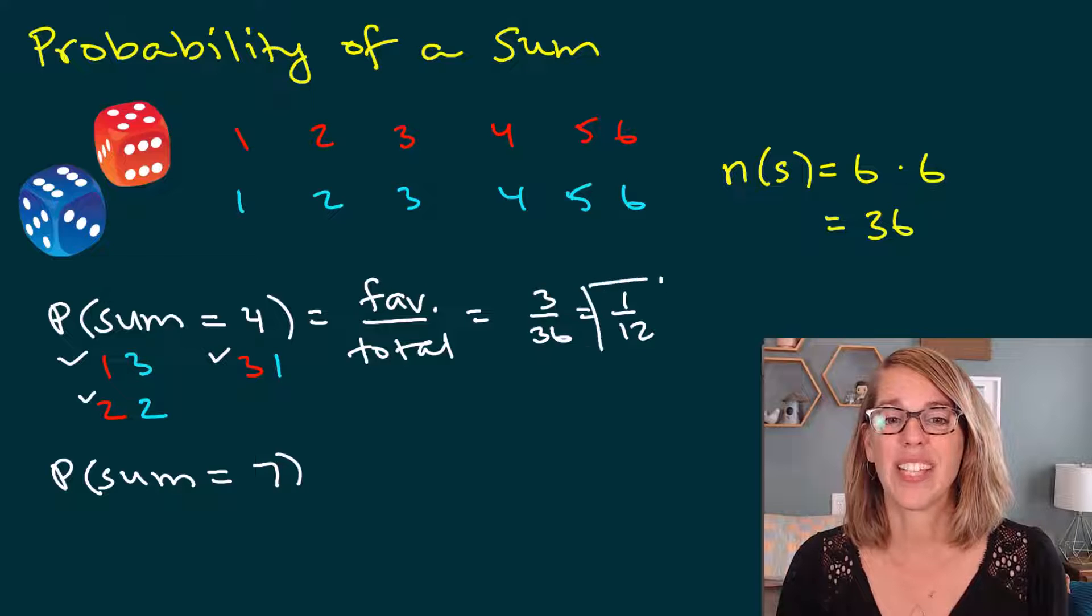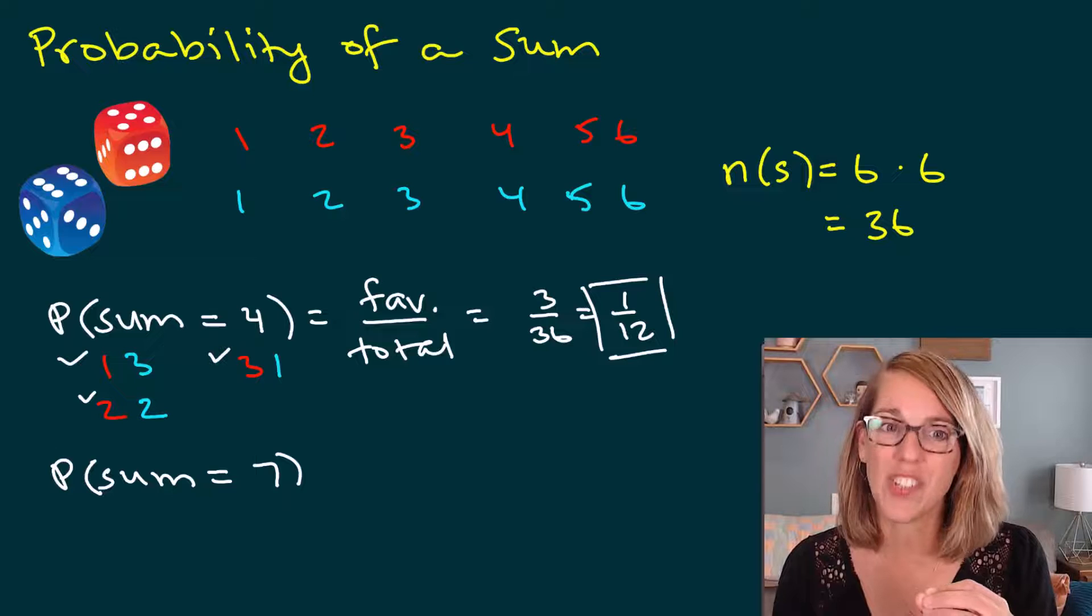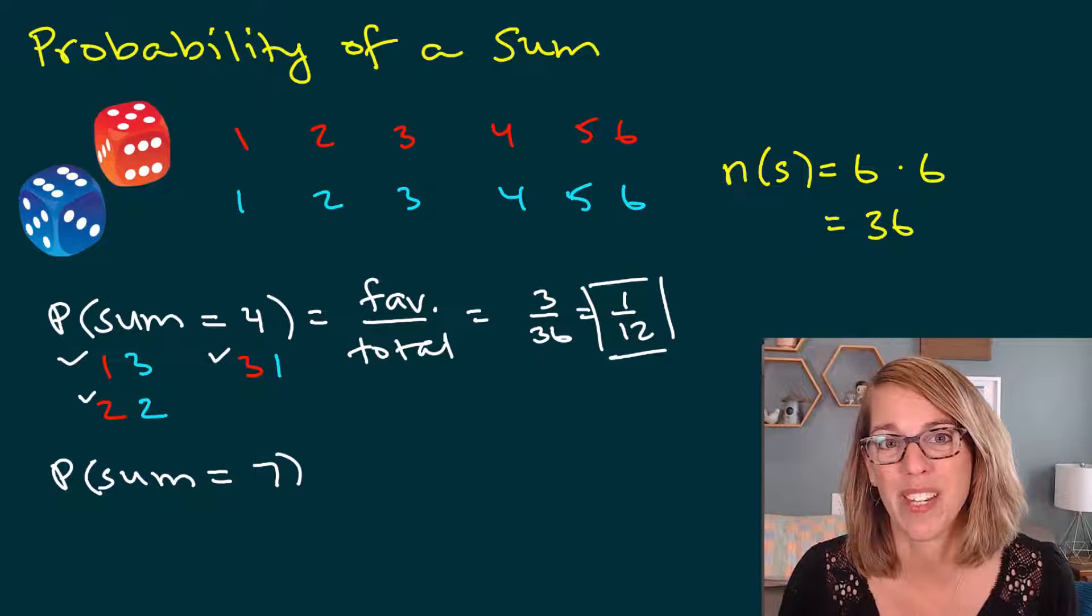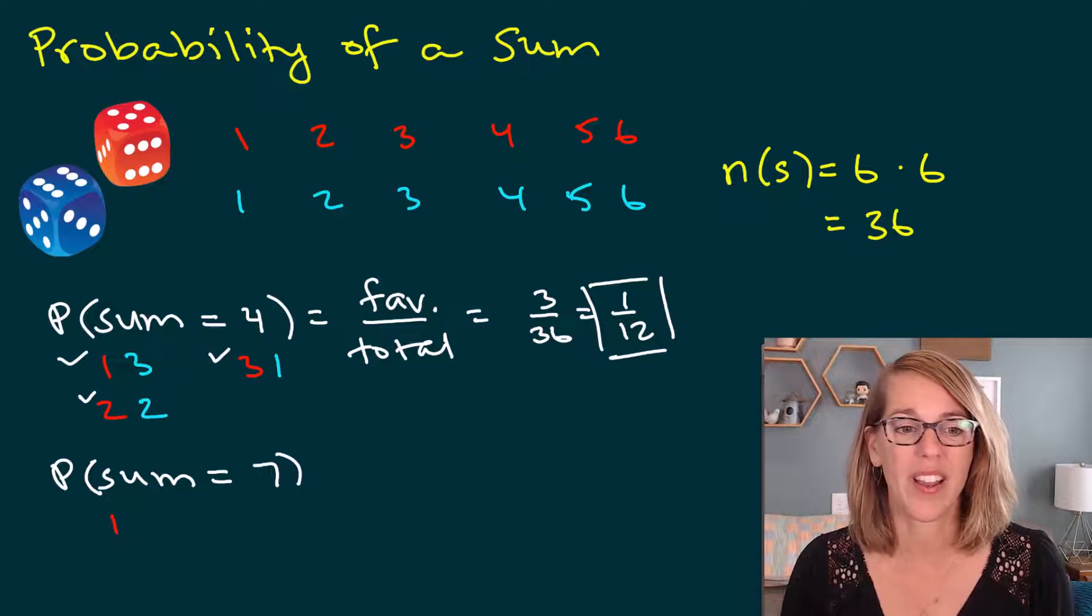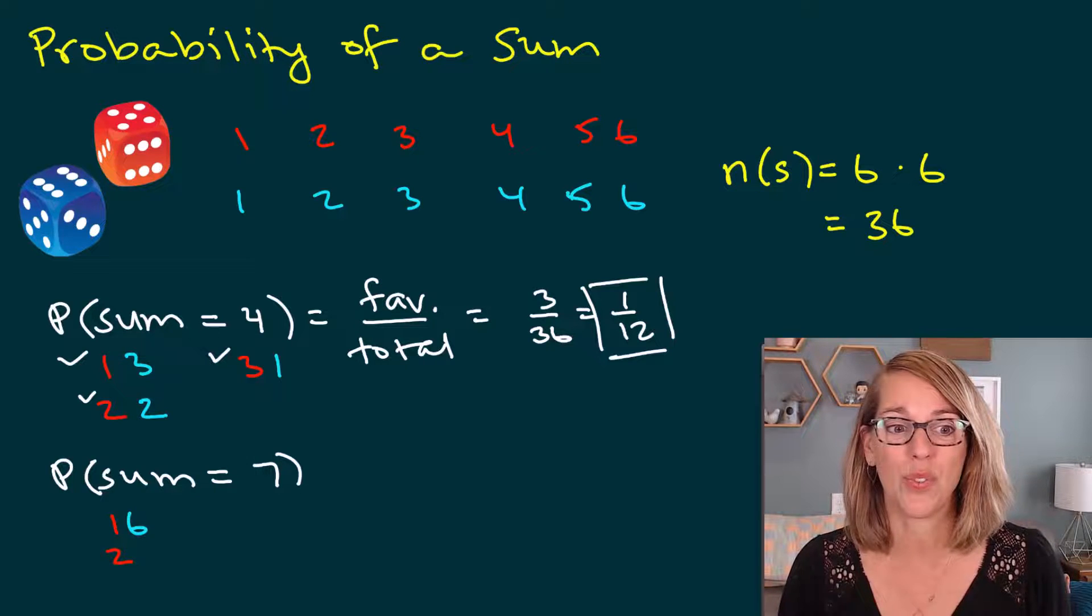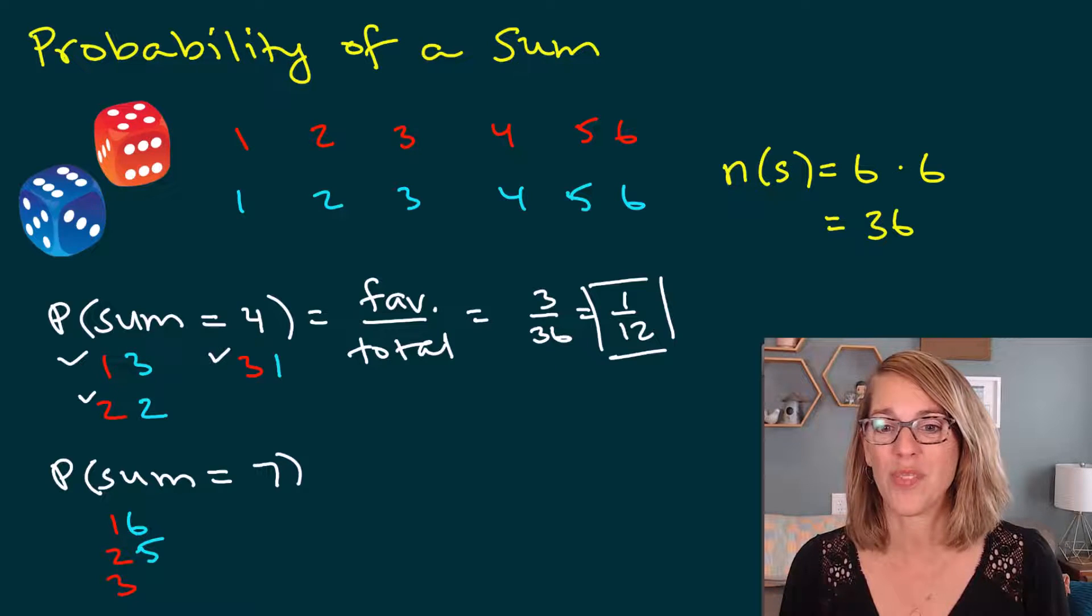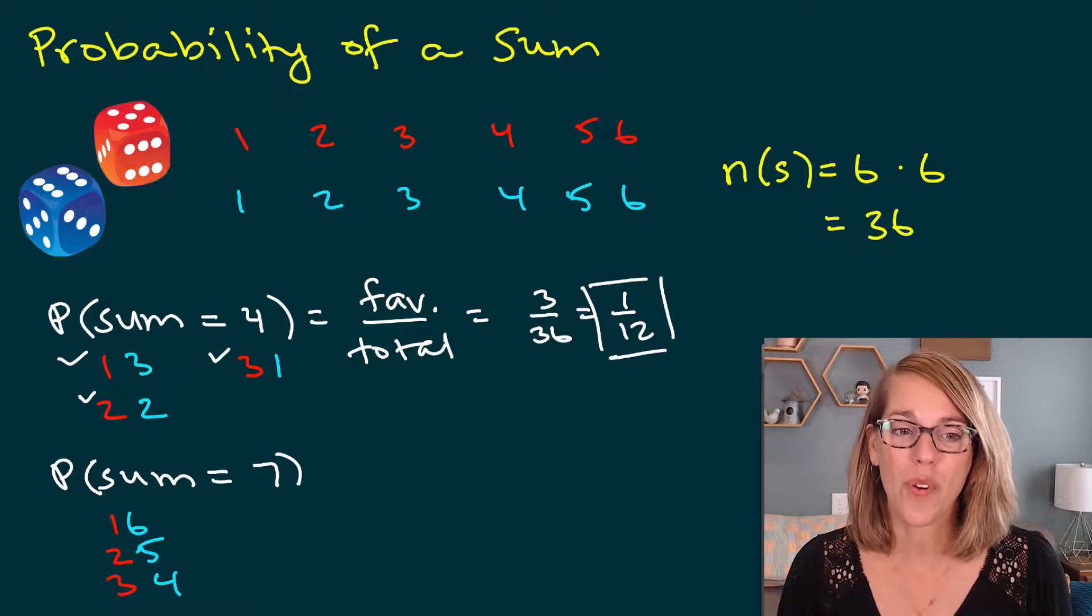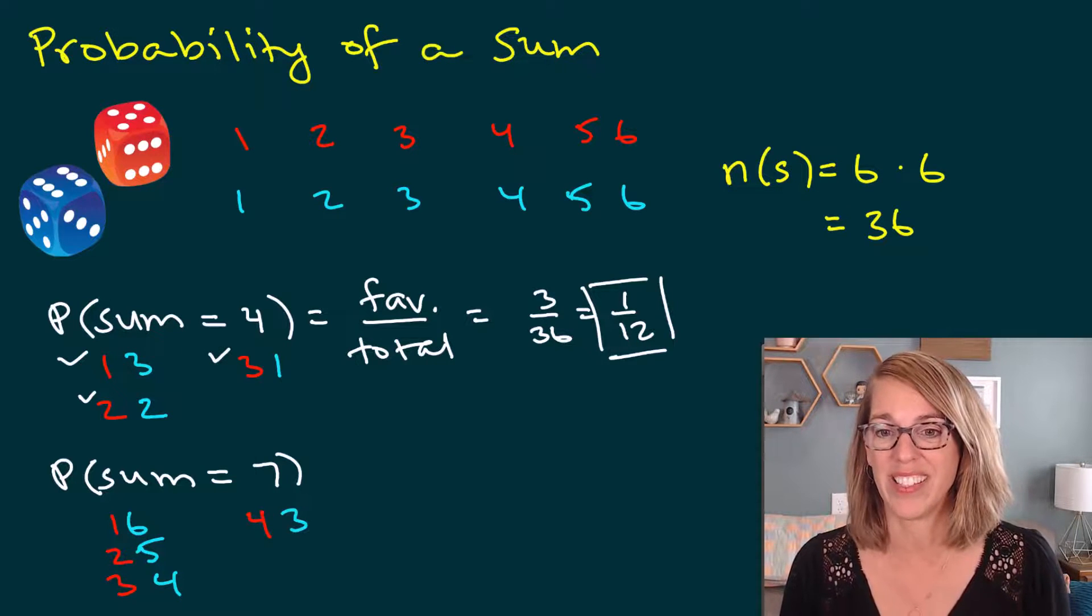Now let's go ahead and do the same thing with the sum of seven. I want to very systematically go through each of the numbers that I've got for my red dice and figure out how I can put them together with a blue dice to add up to seven. So that would be a one and a six. I could also do, just going through the numbers here, a two would be matched with a five. A three would be matched with a four.